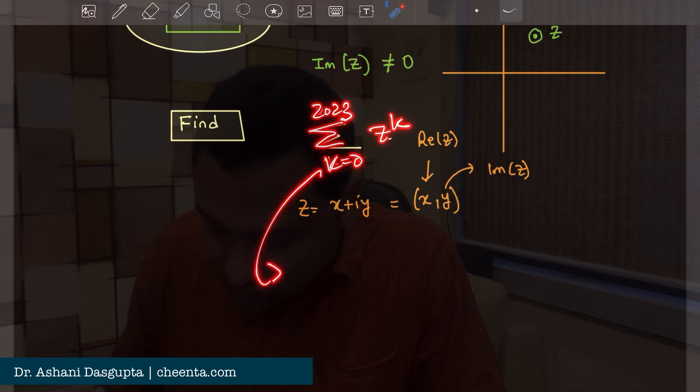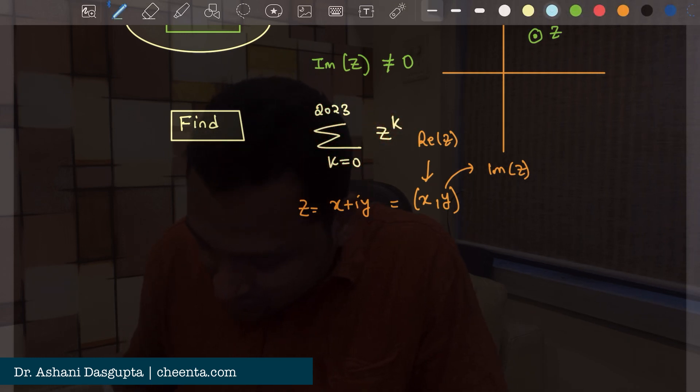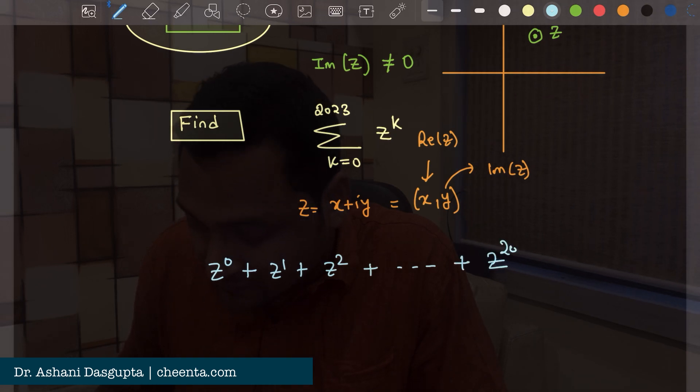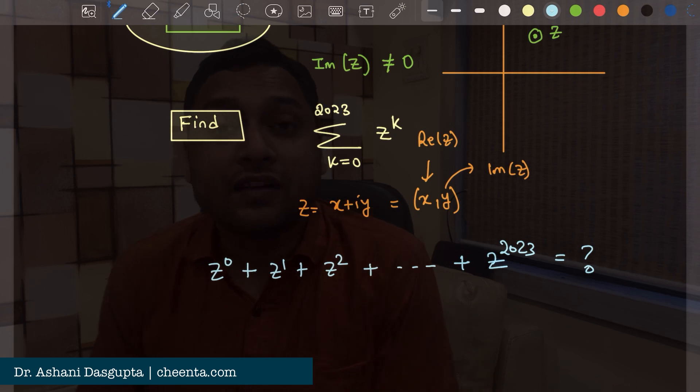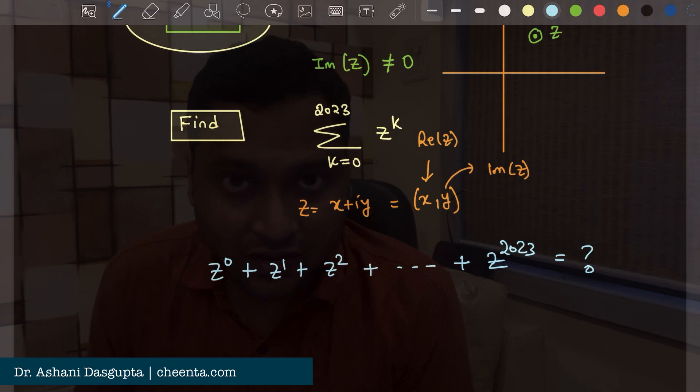If I write it down in an expanded manner it's z to the power 0, z to the power 1, z to the power 2, up to z to the power 2023. We want to find out the value of this sum. So how do we solve this?